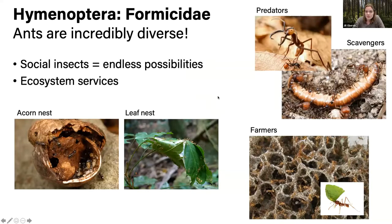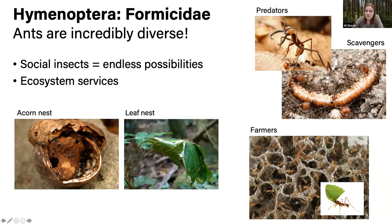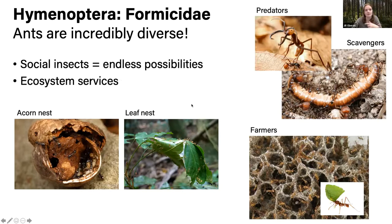Some other ways ants are diverse are in their nest sites. Some nest in the ground, some only nest in trees, and some restrict their entire colony to the inside of a single acorn. Their diet and ecology are similarly varied — if the animal kingdom is doing it, ants are doing it. There are predatory ants like army ants, scavengers, and even farmer ants that grow their own fungus or tend flocks of aphids or other hemipterans. Because they're social insects living in colonies, that's opened up a lot of diversification possibilities, and they perform many important ecosystem services like helping break down fallen trees.